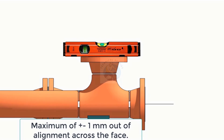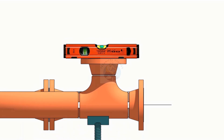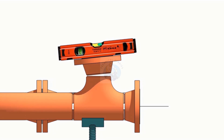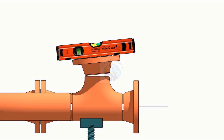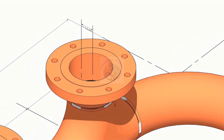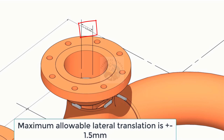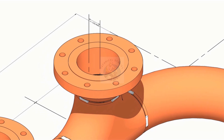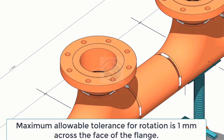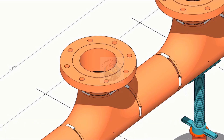Flanges shall not be more than ±1 mm out of alignment across the face. The maximum allowable lateral translation shall not be more than ±1.5 mm. Maximum allowable tolerance for rotation is 1 mm across the face of the flange.